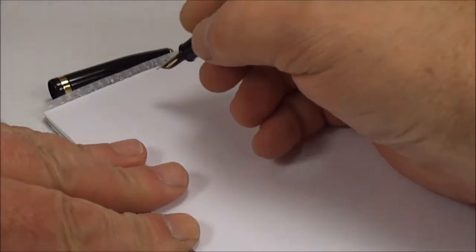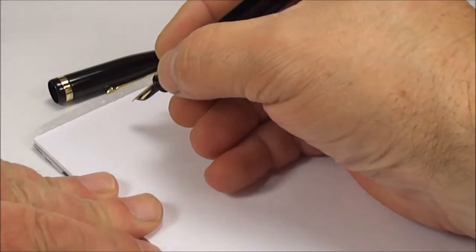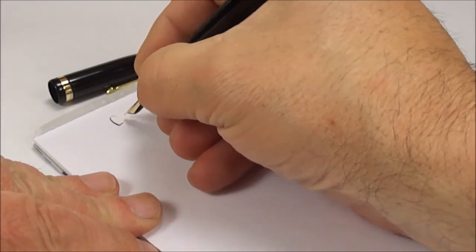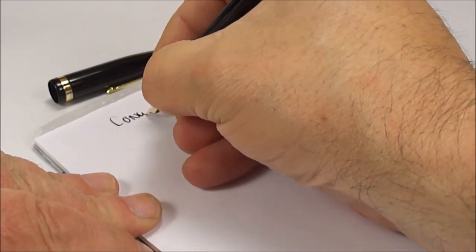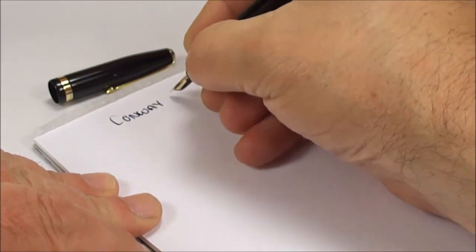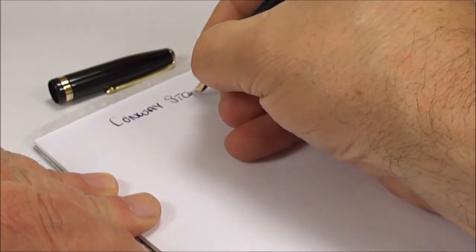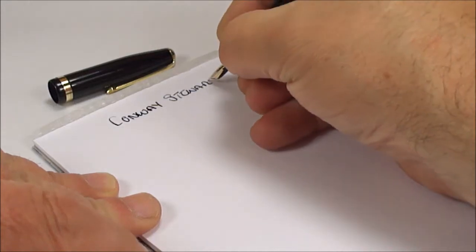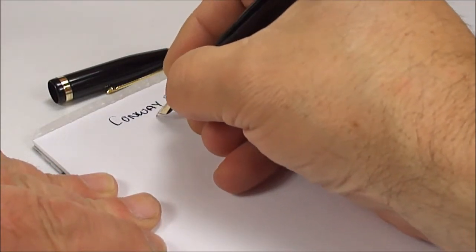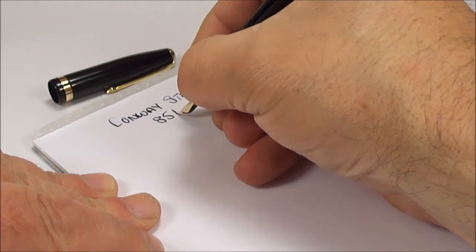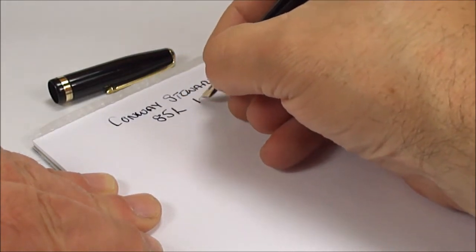Let's bring on some paper and see how it writes. What we've got here is a Conway Stewart, as we said, this particular model is the 85L, and we're dating it from 1956-57.